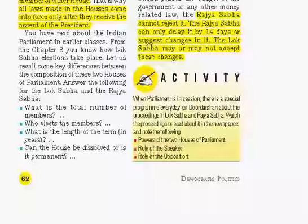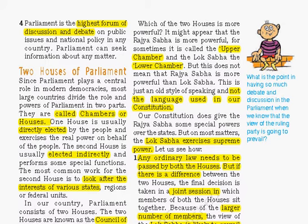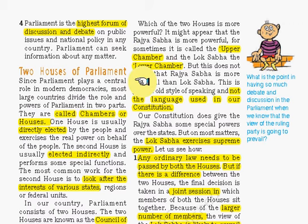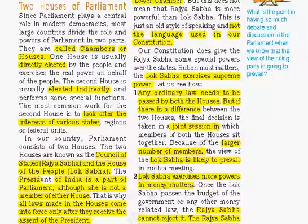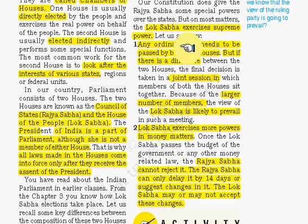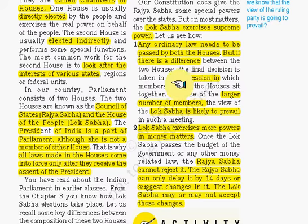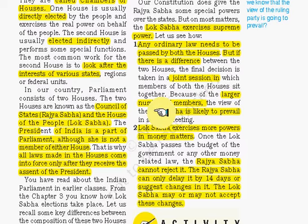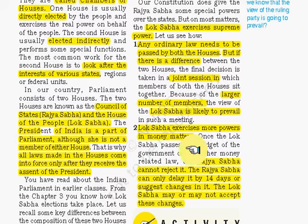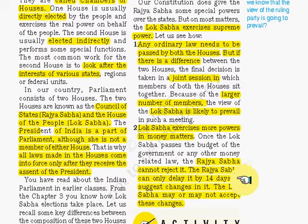Rajya Sabha is roughly known as the upper house and Lok Sabha as the lower house, but both have very different powers unrelated to their names. Lok Sabha exercises supreme power in the case of ordinary laws which need to be passed by both houses — if there are disputes and differences, a joint session of both houses is held. Since Lok Sabha has more members than Rajya Sabha, Lok Sabha's decision prevails. In case of money matters and money bills, Lok Sabha alone passes these bills. Rajya Sabha can only delay by 14 days or suggest changes.